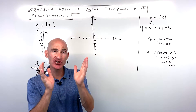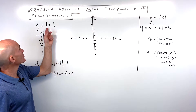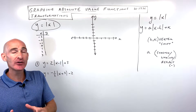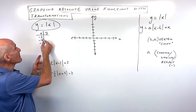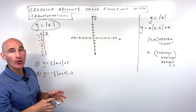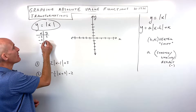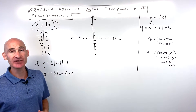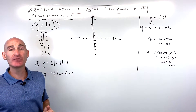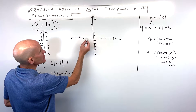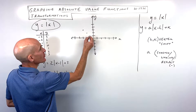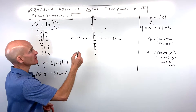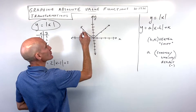First we want to talk about the basic shape of an absolute value function graph. We're going to look at the parent function, y equals absolute value of x, and plug in some negative values, zero, and some positive values in a table. Remember, when you put in negative three, the absolute value always makes that quantity positive. If it's zero, it stays zero, and if it's positive, it stays positive. If we graph these points, we get a V-shape graph with a real sharp corner, unlike a parabola which has a U-shape.